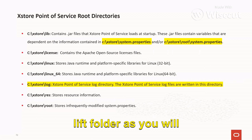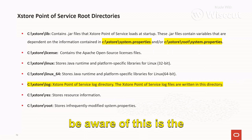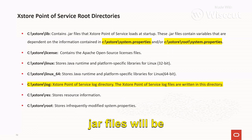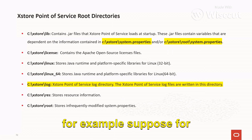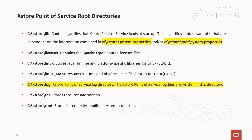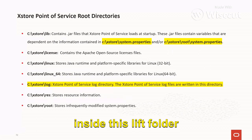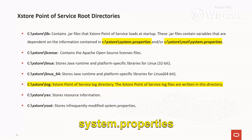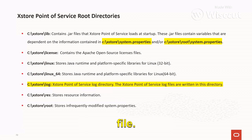Another is the C:\AccessStore\lib folder. As you may be aware, this is the folder where all the .jar files will be available. For example, if you are looking for the custom environment config.jar, that file will be available inside this lib folder only. Information about which files will get loaded will be available in the C:\AccessStore\system.properties and C:\AccessStore\root\system.properties files.